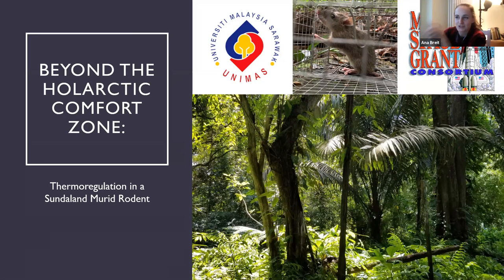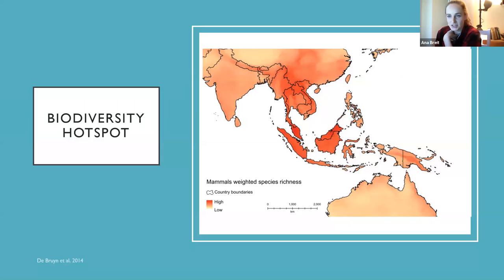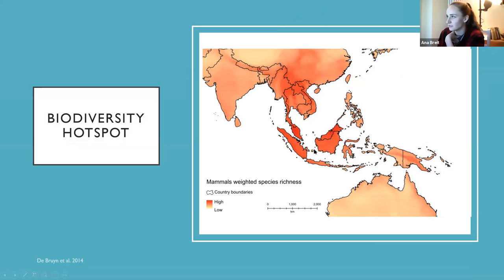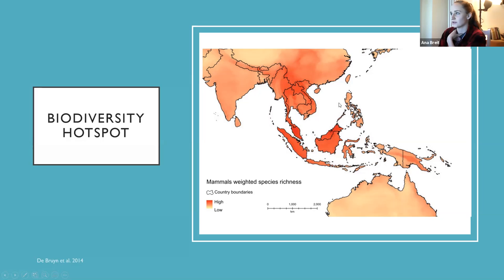I studied thermoregulation in a Sundaland rodent. Sundaland is the area around Borneo, Indonesia, and Thailand. Southeast Asia is a biodiversity hotspot with an insane amount of endemic species found nowhere else on earth. Borneo is made up of part of Indonesia, Sarawak, Malaysia, and Brunei, and I was about an hour from the South China Sea. This is interesting because Borneo hasn't been separated from mainland for as long as Madagascar — it's a relatively shallow continental shelf region.